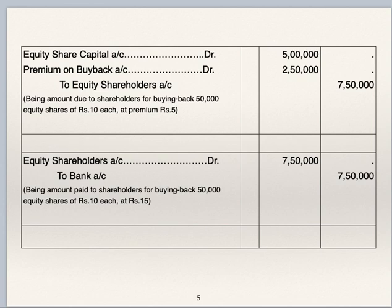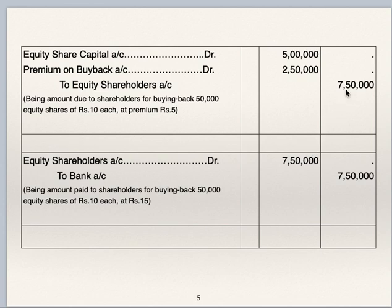Next entry is to show buyback of equity shares at premium. Equity share capital account debit 5 lakhs (50,000 into 10), premium on buyback account debit 2,50,000 (50,000 into 5), to bank 7,50,000. Equity share capital account debit to bank 7,50,000. So if you see equity share capital account, there is 1 debit and 1 credit.